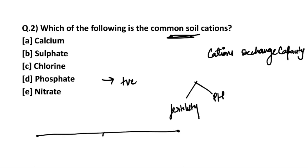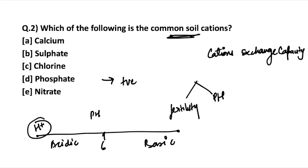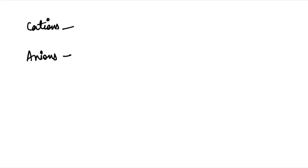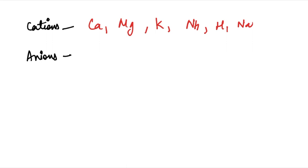Looking at the pH scale: below 6 is acidic and above 6 is basic. Higher the number of hydrogen ions, lower is the pH level; lower the concentration of hydrogen, the higher is the pH level. This is how we determine pH with hydrogen ion concentration. The commonly available cations in soil are: calcium, magnesium, potassium, ammonium, hydrogen, and sodium.